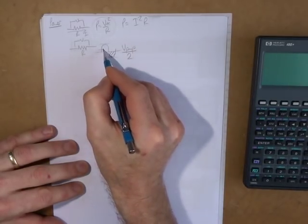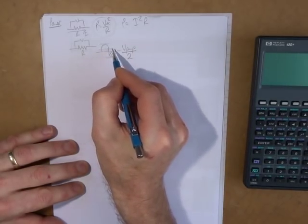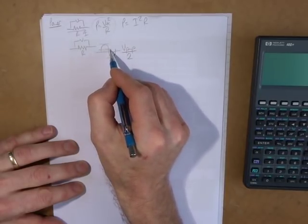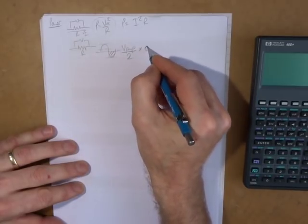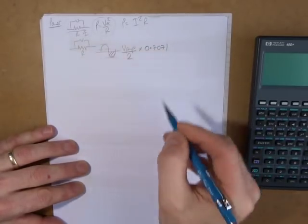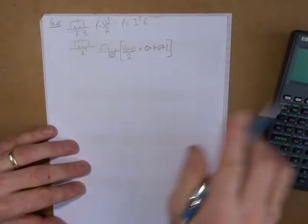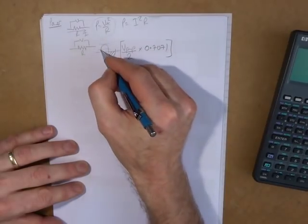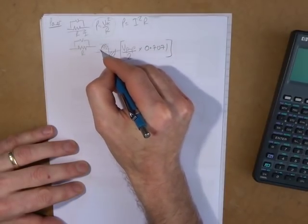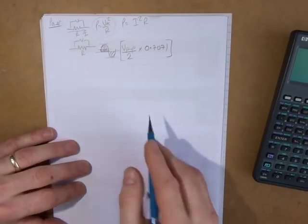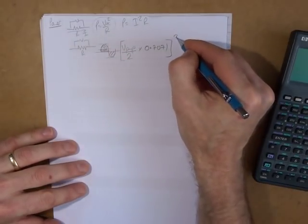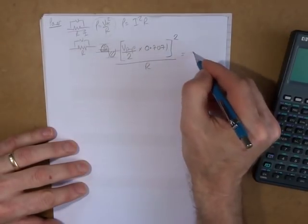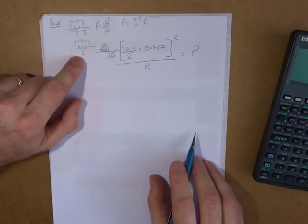There's a value which is the equivalent, when going through a resistor, of voltage DC, and that is 0.7071. So our voltage peak-to-peak divided by two, multiplied by 0.7071 — we're left with just that portion. If that is now squared and then divided by our resistor, we've now got our power — the power being dissipated in that resistor.